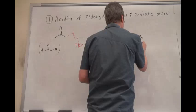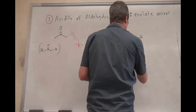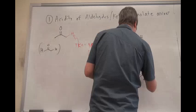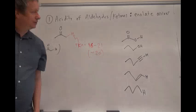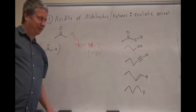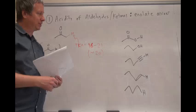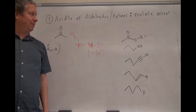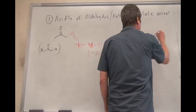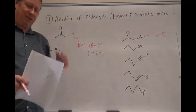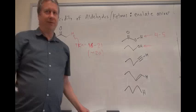To put that in context: carboxylic acids have a pKa around 4 to 5, so they're much more acidic. Alcohols are around 15. Alkynes are also roughly around 20 — we could deprotonate them with a strong base like butyllithium to make them nucleophilic and attack electrophiles. That was a key point of the alkyne chapter.